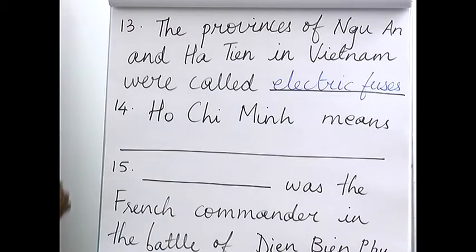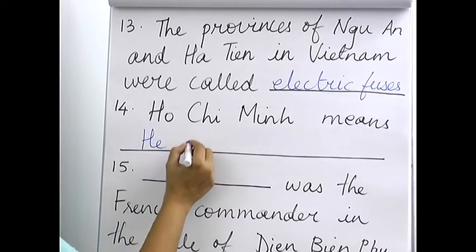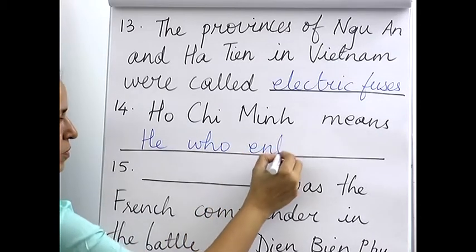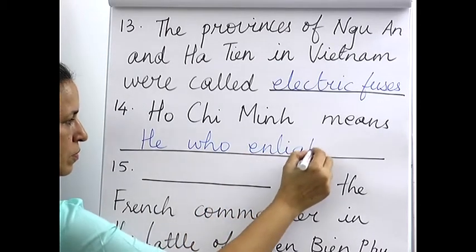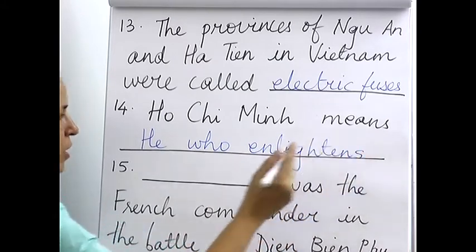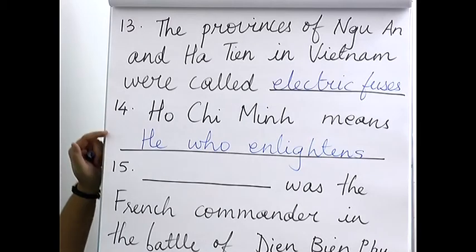Fourteenth: the word Ho Chi Minh — his name — what does it mean? It means 'he who enlightens.' That is what his name means.